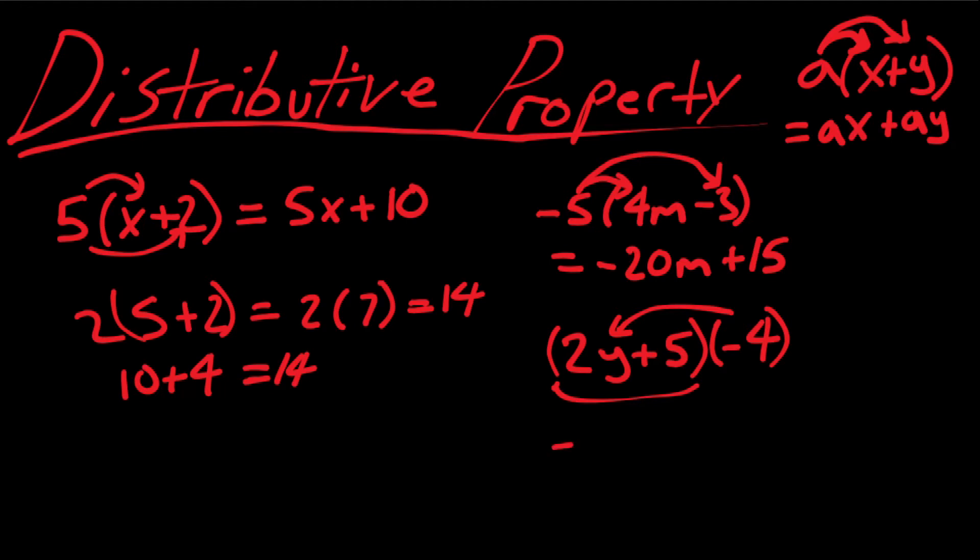The negative 4 multiplies into the 2y. So, we have negative and positive, which gives us a negative output. 4 times 2 is 8, so negative 8y. And then we have negative 4 times positive 5, which gives us a negative output, negative 20.